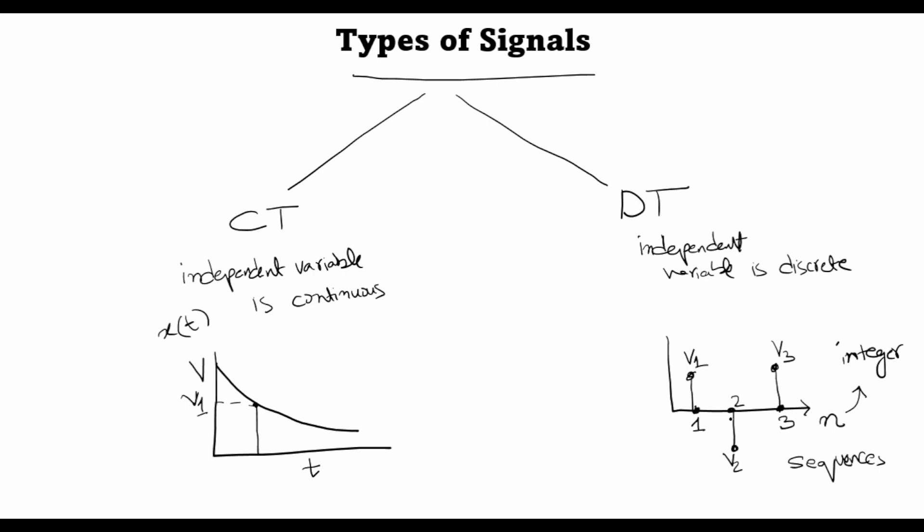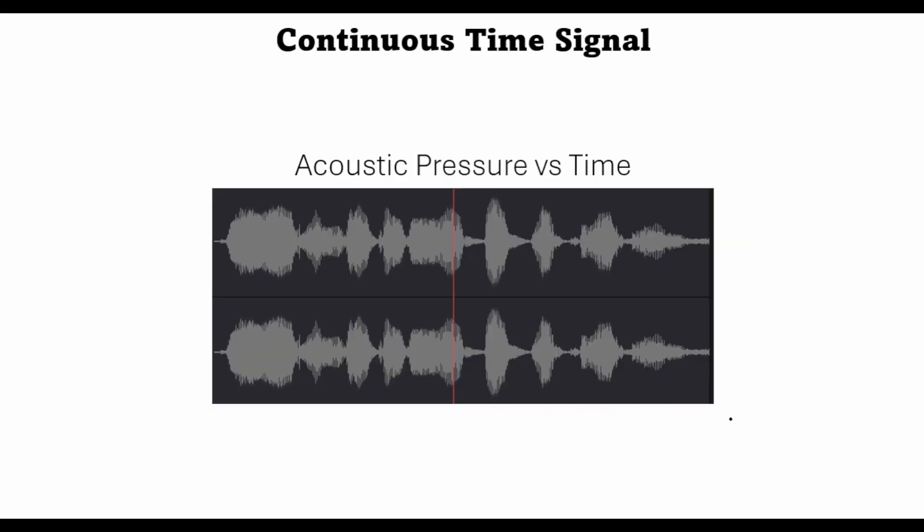So let's look at some examples of continuous time signals and discrete time signals. So here is an example of a continuous time signal: acoustic pressure versus time. So when I am editing these lessons in DaVinci Resolve, I work with an audio file like this. So this variation that you see is acoustic pressure versus time.